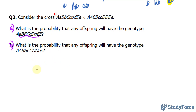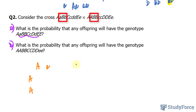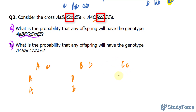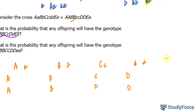So the first monohybrid cross will be capital A little a crossed with capital A capital A. Then we have the B gene cross, followed by C little c crossed with little c little c, then two little d's crossed with two capital D's, and finally the heterozygous situation for the last gene E.